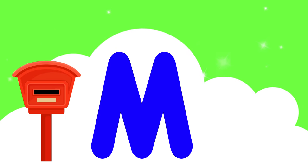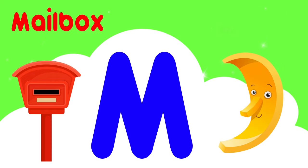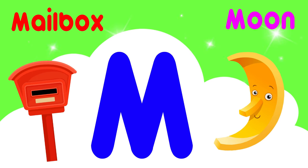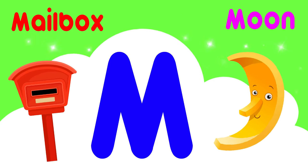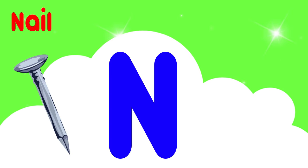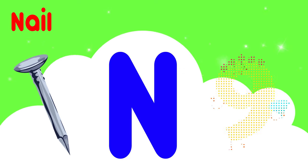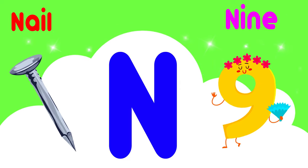M is for mailbox. M, M, mailbox. M is for moon. M, M, moon. M is for M, M, M, M, moon. N is for nail. N, N, nail. N is for nine. N, N, nine. N is for N-N-N-N-nail. N is for N-N-N-N-nine.